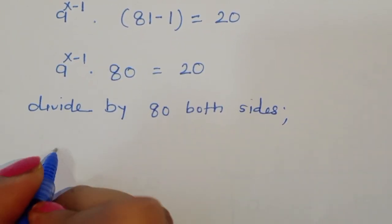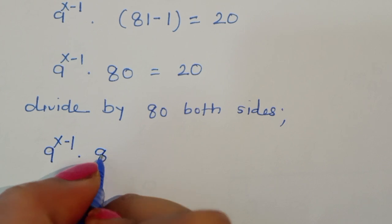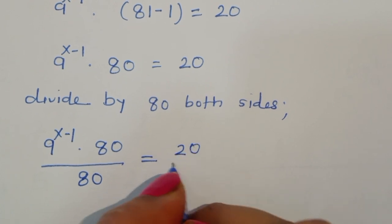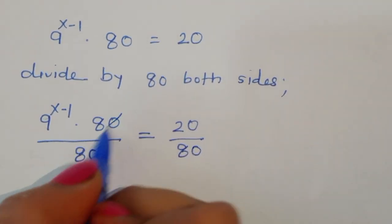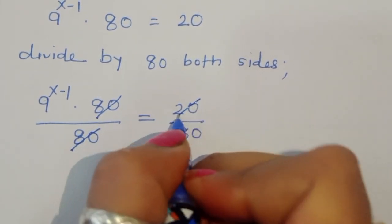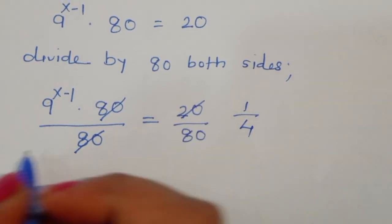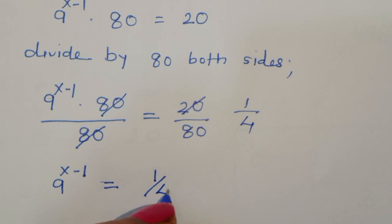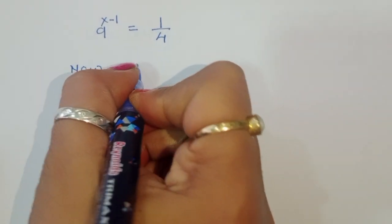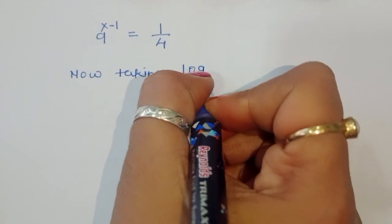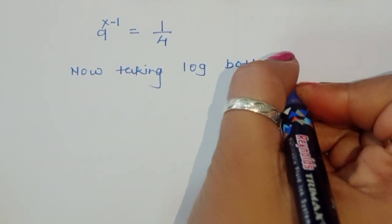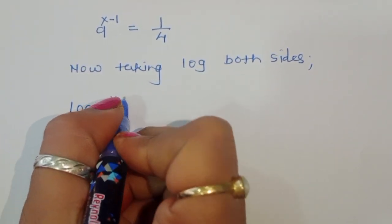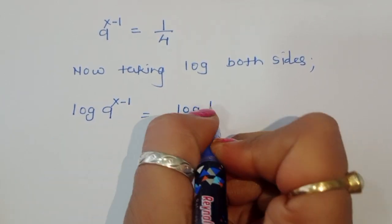Dividing both sides by 80, 9 power (x-1) times 80 divided by 80 equals 20 divided by 80. This simplifies to 9 power (x-1) equals 1/4. Now taking log on both sides.